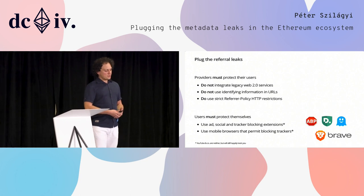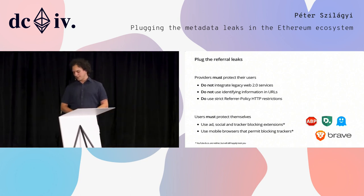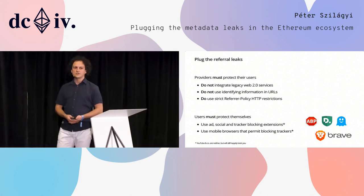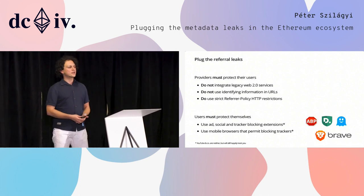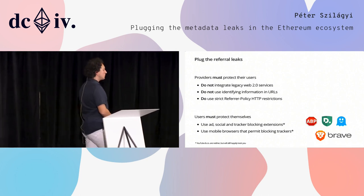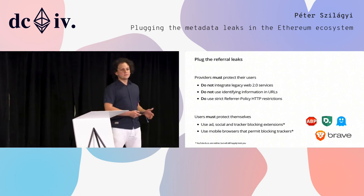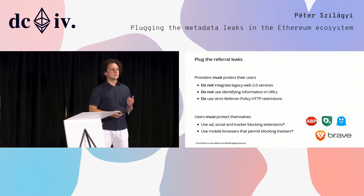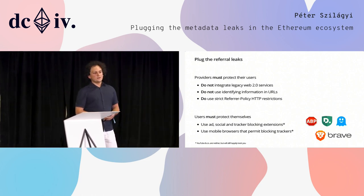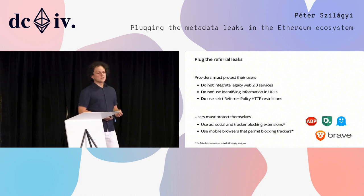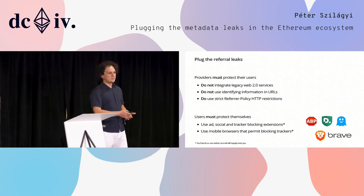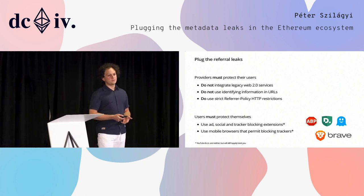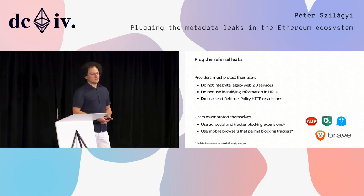However, the issue is that providers fixing it is not really enough, because we can get Etherscan to fix it, but can we get random dApp number 2000 to fix it? Probably not. So users need to protect themselves too, and the obvious choices are browser extensions that block all kinds of trackers, or if you're on a mobile device, you could use a Brave browser — but these can only block so many things.